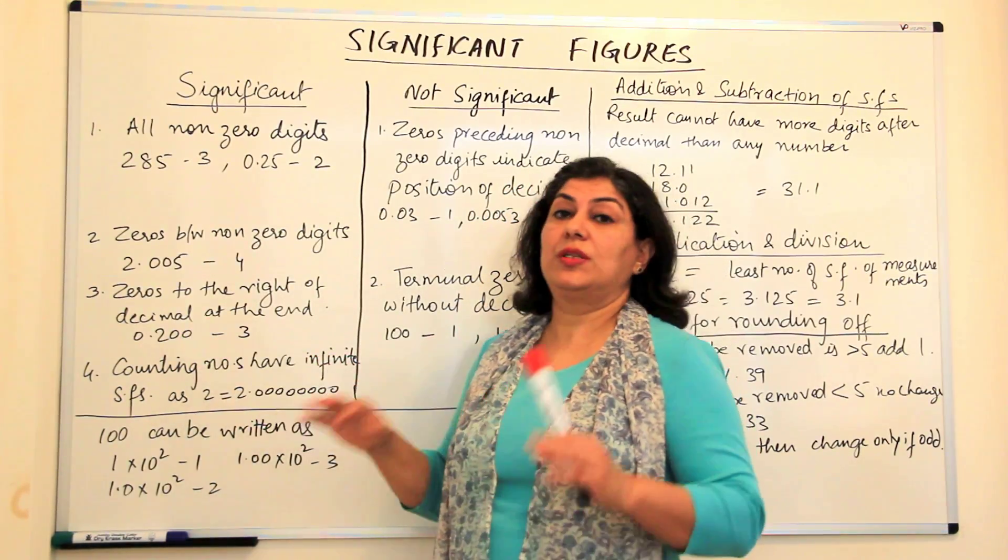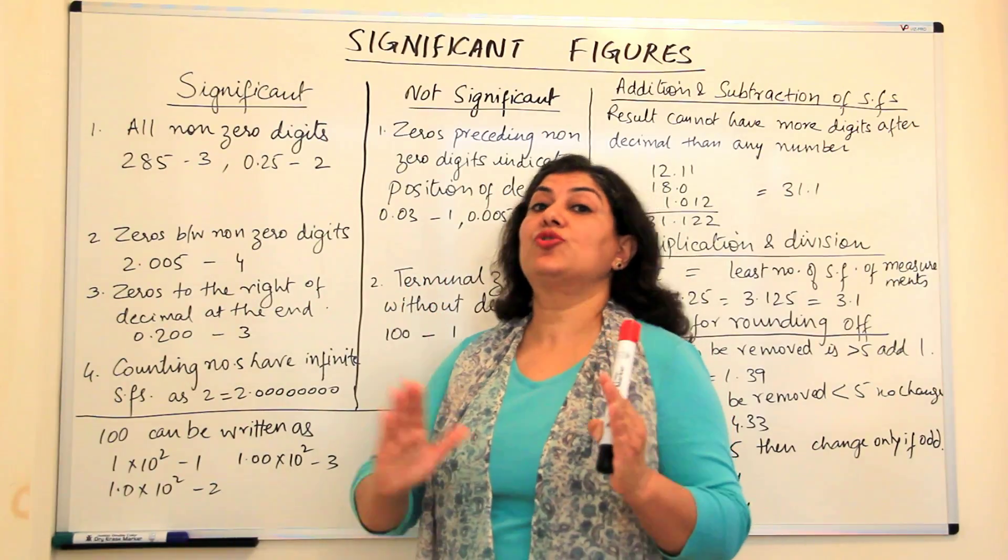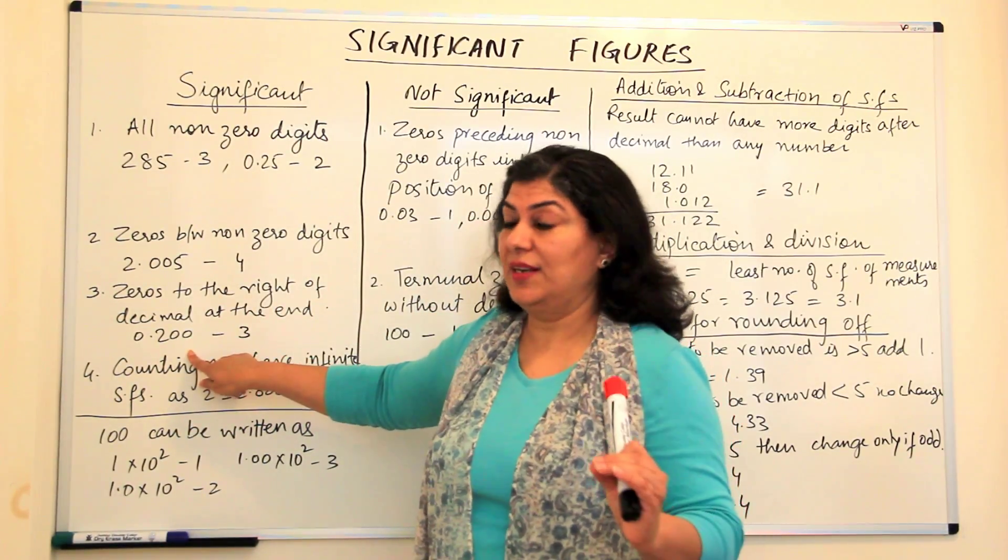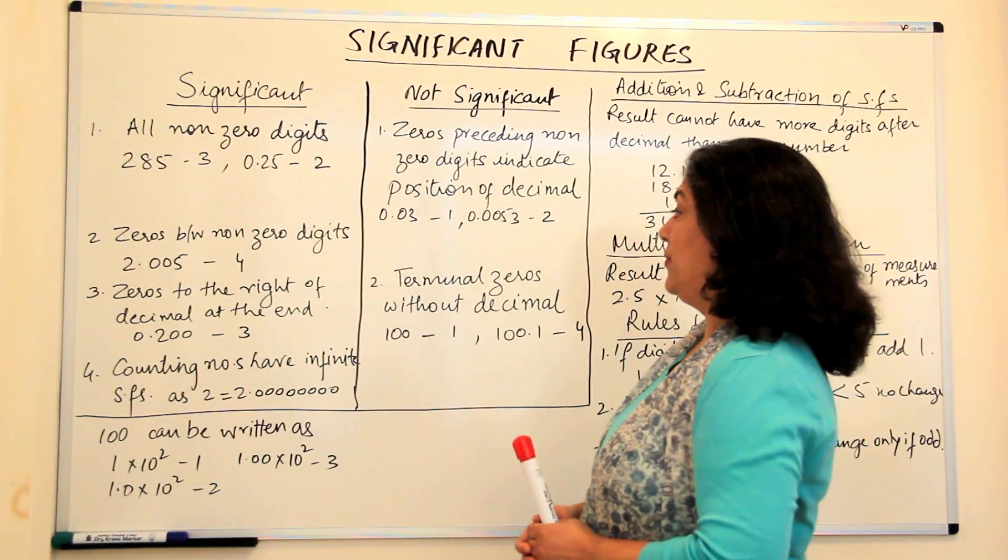It could be one less or one more but usually we said this should have three significant figures. When zeros, the reading ends in zeros and these zeros are to the right of a decimal, then those zeros are significant. It means you have measured to that accuracy.